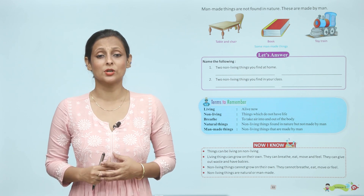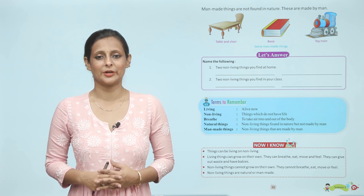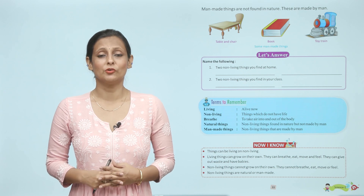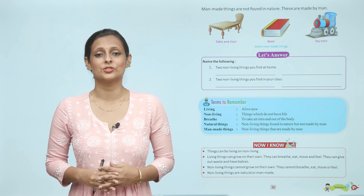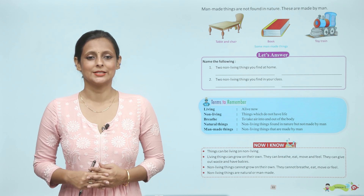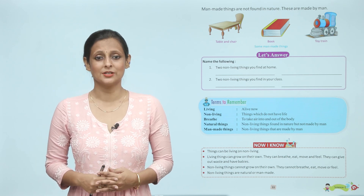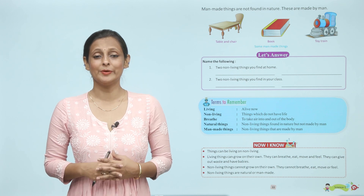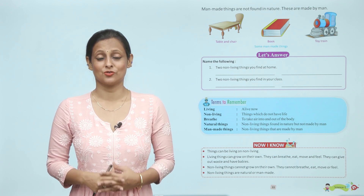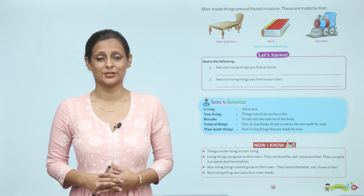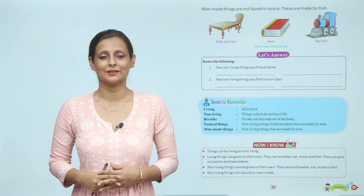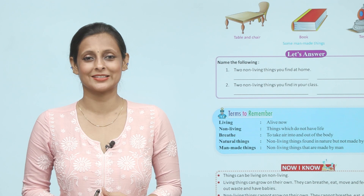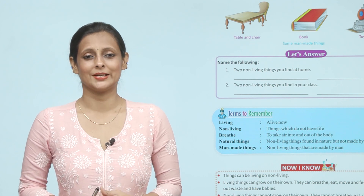Man-made things are not found in nature; these are made by man. For example, tables and chairs that you sit on and use for reading books and eating food are man-made. Books that you read are also man-made. A toy train that you ride on vacations is also man-made.